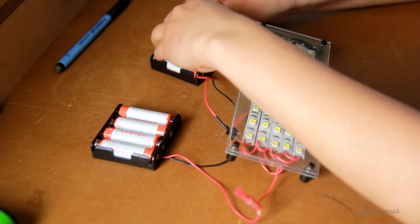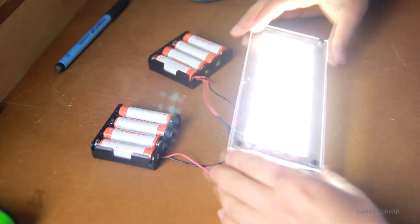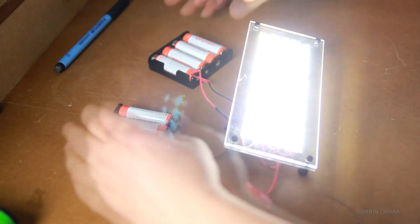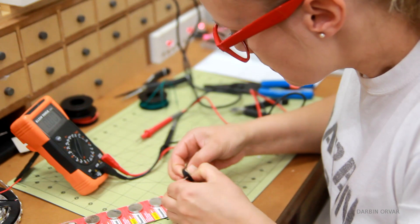Now to power this, I was first thinking of using AA batteries, so I did a test. And it worked out really well, but I thought it was a little too heavy and clumsy. And I wanted the panel really light. So that brought me to coin cell lithium ion batteries instead.